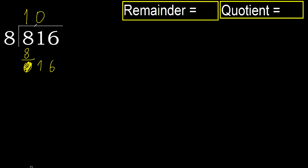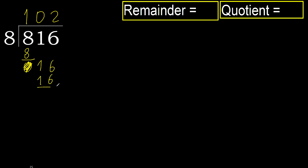16. 8 multiplied by 2 is 16. 16 is not greater, ok. Subtract. 16 minus 16 is 0.